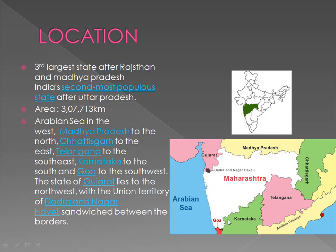As you can see on the map, towards the north of Maharashtra is Madhya Pradesh, towards the east is Chhattisgarh, towards the south is Telangana, towards the south-west is Karnataka, and towards the west is Goa. The union territory of Dadra and Nagar Haveli stands between Maharashtra and Gujarat state.